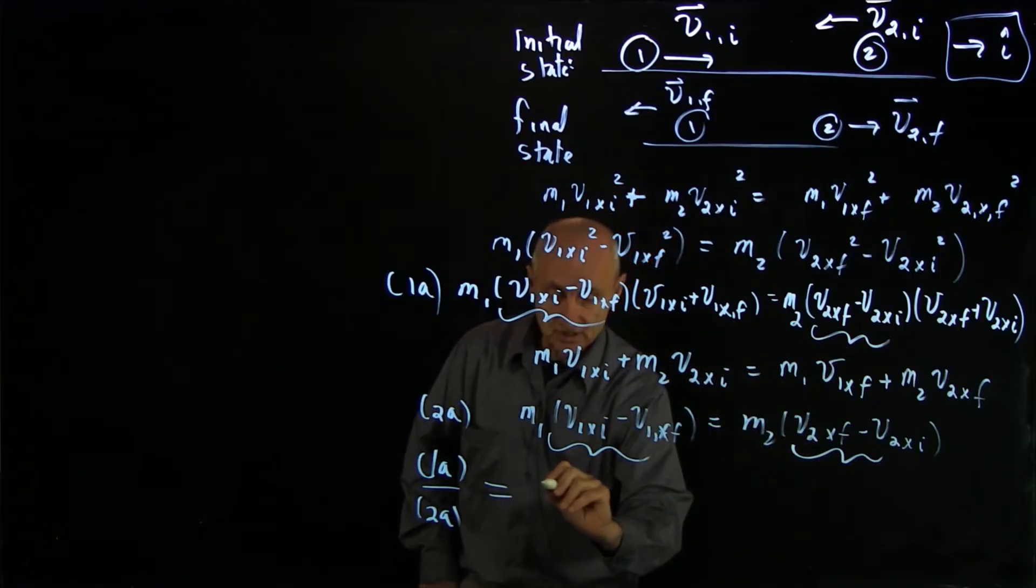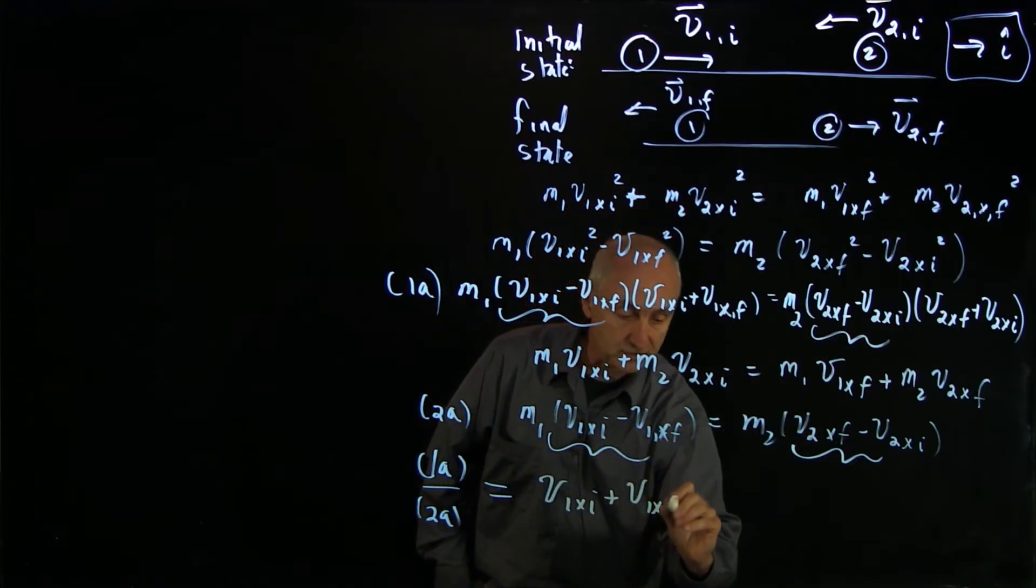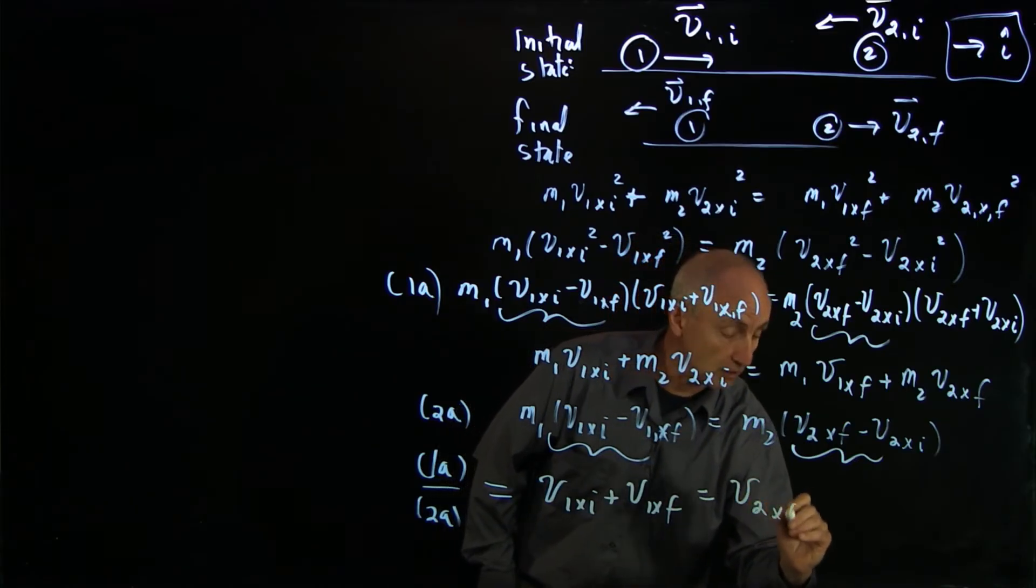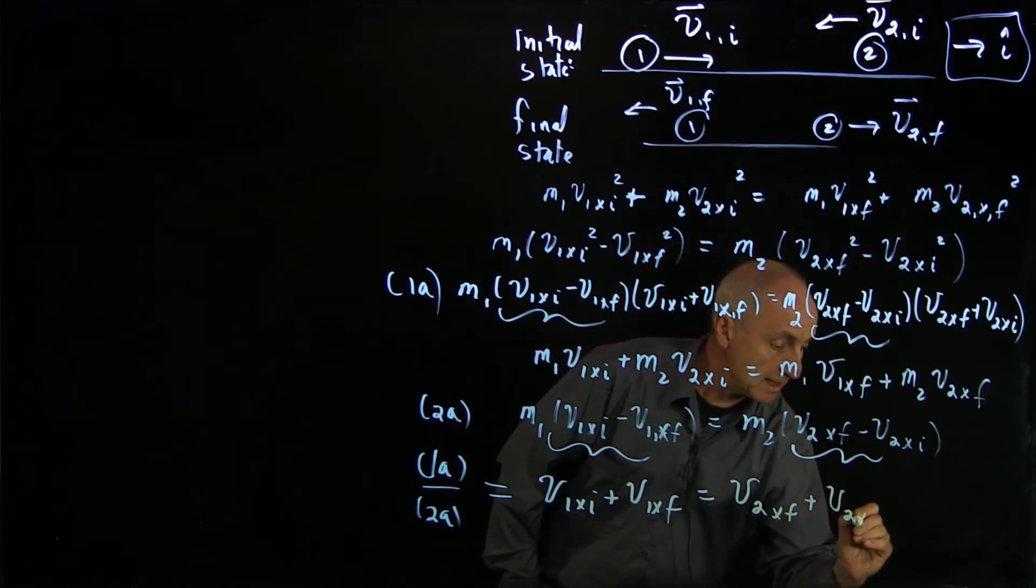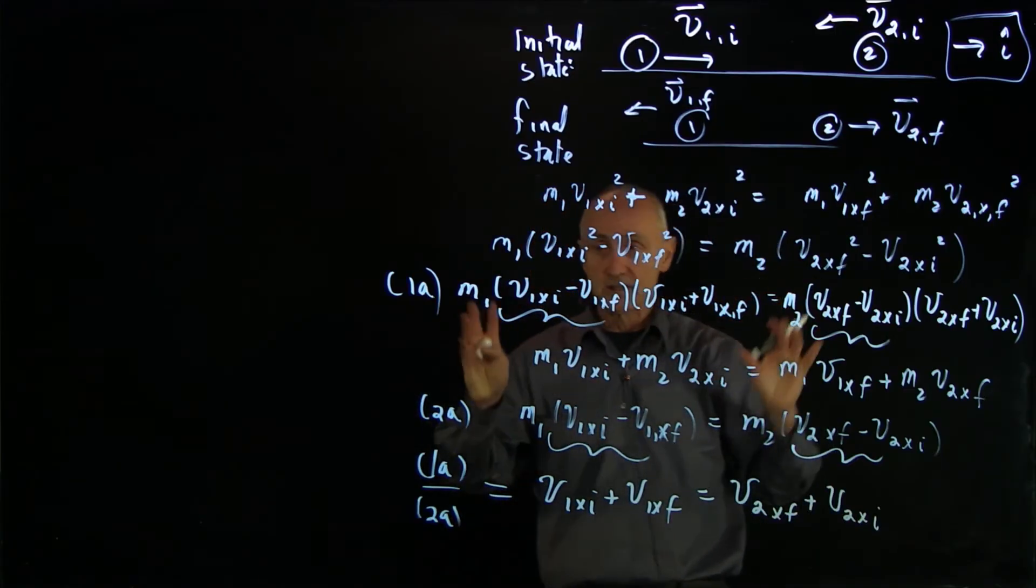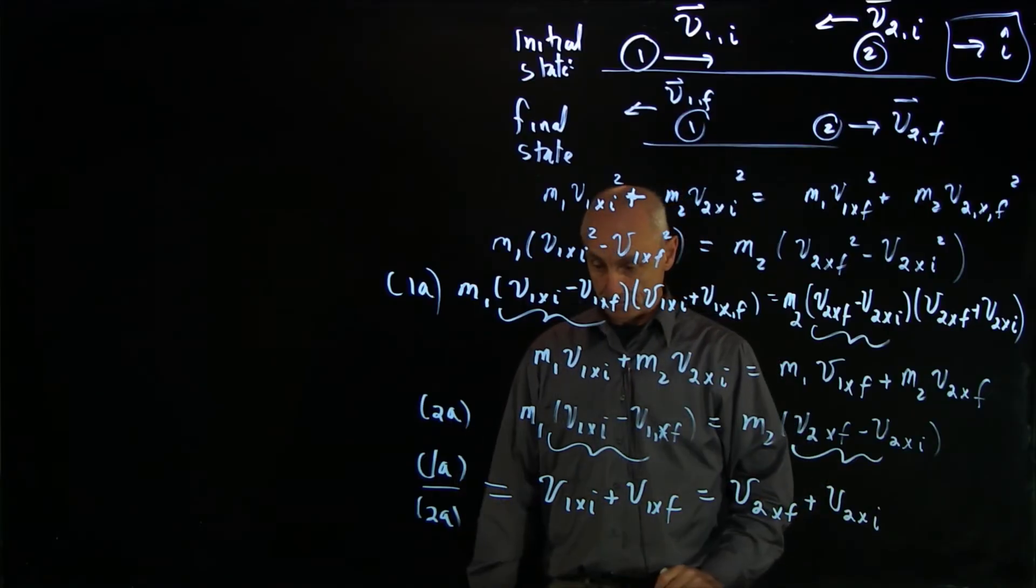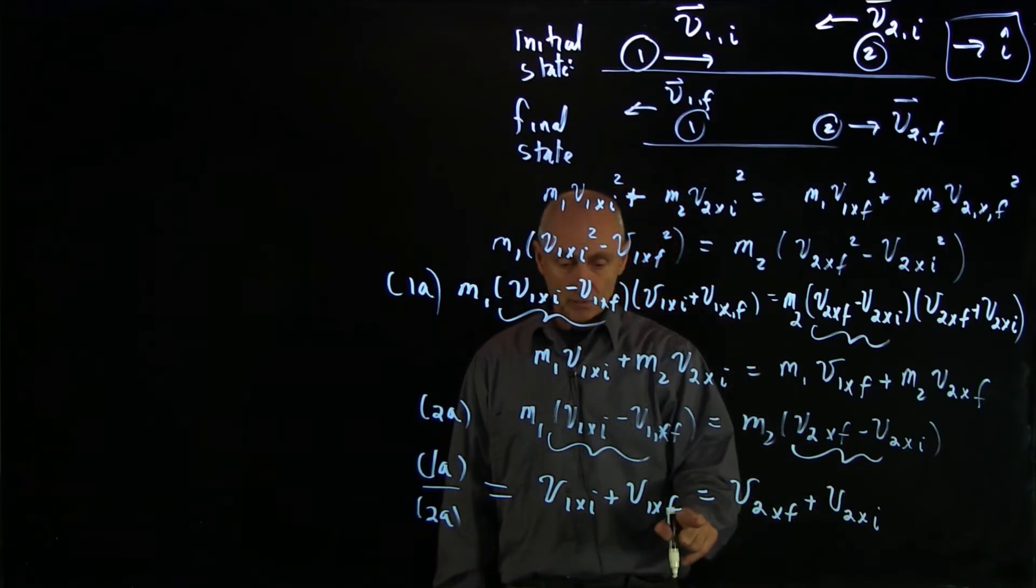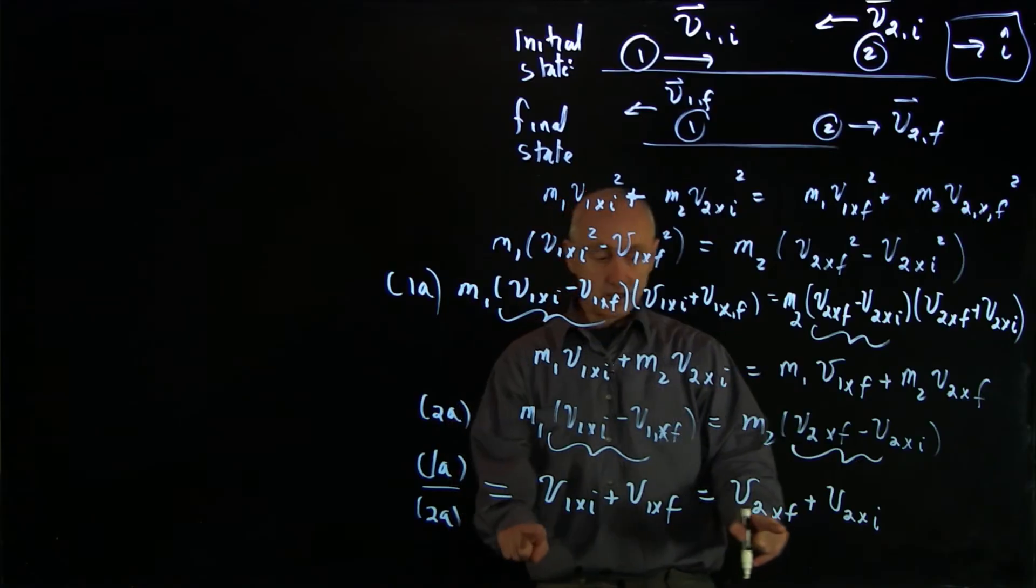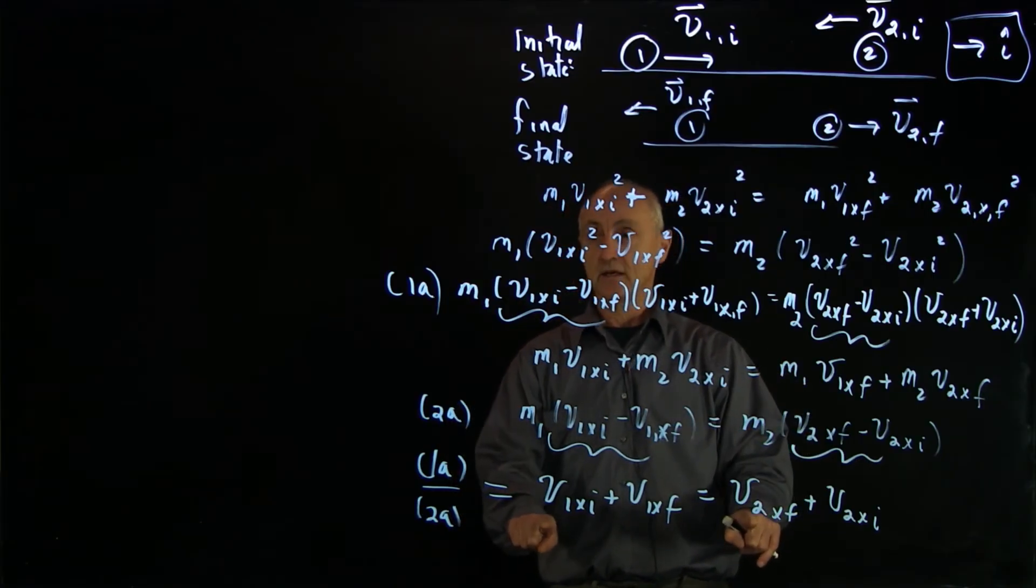And that leads to just this term equal to that term. And the significance, as you'll see when I write it out: v1x initial plus v1x final equals v2x final plus v2x initial. I've solved the quantity, I've eliminated the squared terms, linearized the system. Now I still want to write this equation in another way. Another important point to notice is that this equation is independent of mass.